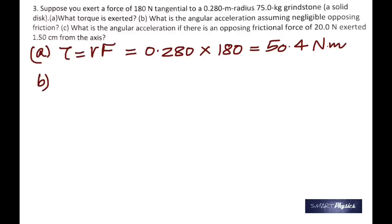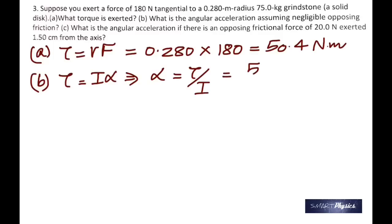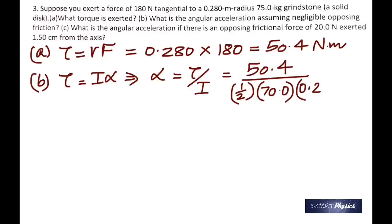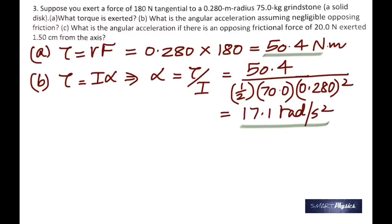Part b: what is the angular acceleration, assuming negligible opposing friction? Angular acceleration can be found using the formula torque = Iα. We already know the torque, and the moment of inertia for a disk is ½mr². The mass is 75 kg and the radius is 0.280 m, giving alpha = 17.1 rad/s².